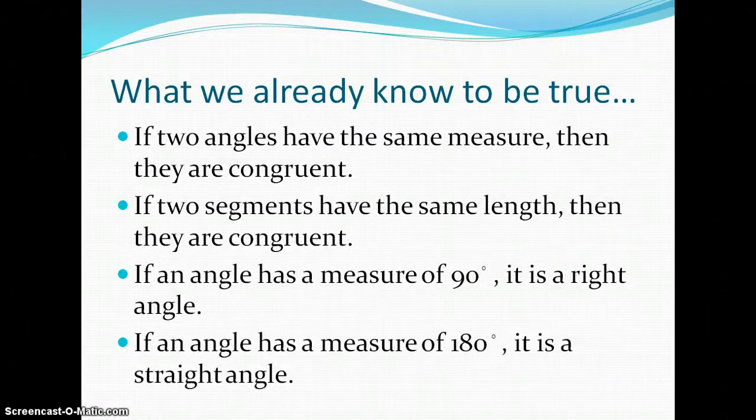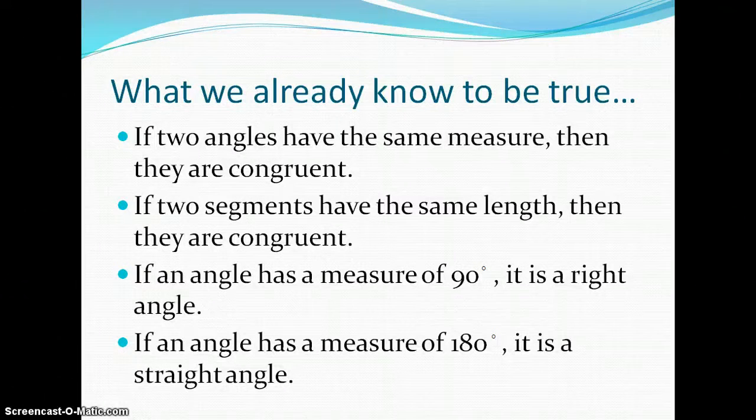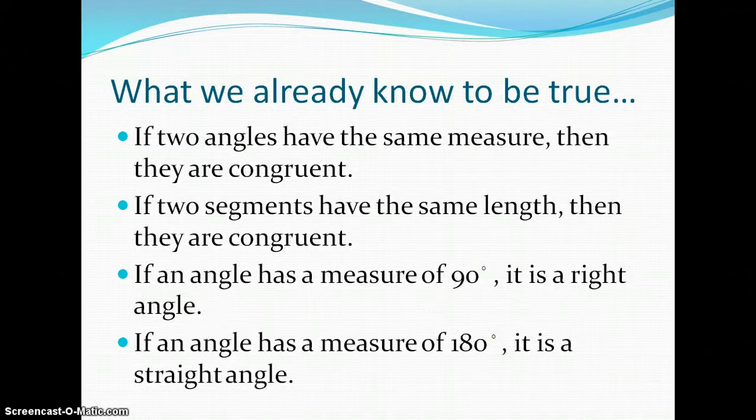These are some things that we already know. If two angles have the same measure, then they are congruent. If two segments have the same length, then they are congruent. If an angle has a measure of 90 degrees, it is a right angle. And if an angle has a measure of 180 degrees, it is a straight angle. We're going to use some of these in our proof of the theorems.